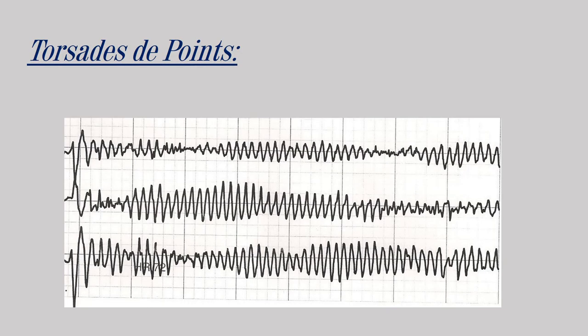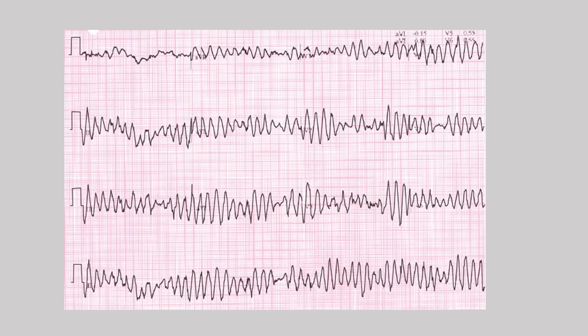Torsades de pointes is a form of polymorphic ventricular tachycardia with a specific shape. Many drugs can cause it, especially drugs that cause hypokalemia and hypomagnesemia. The treatment of choice is intravenous magnesium sulfate. Here is how it looks on an ECG paper.